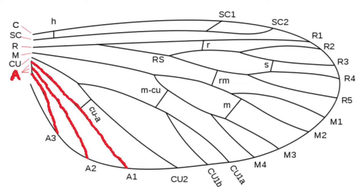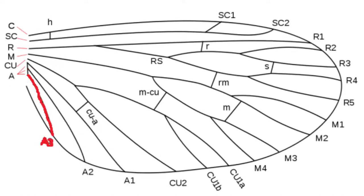And we finally have made it all the way down to the anal veins, which of course are called A1, A2, and A3.